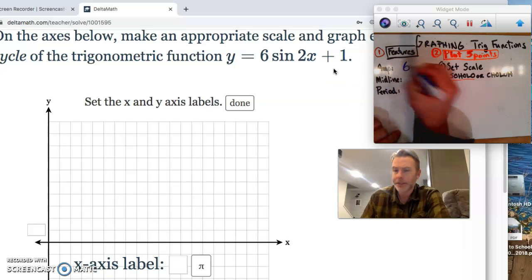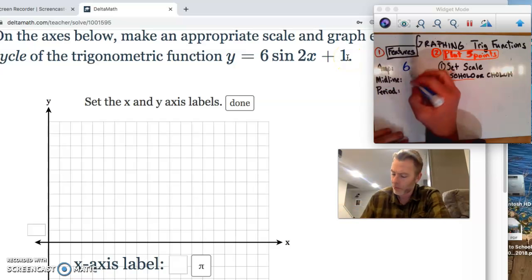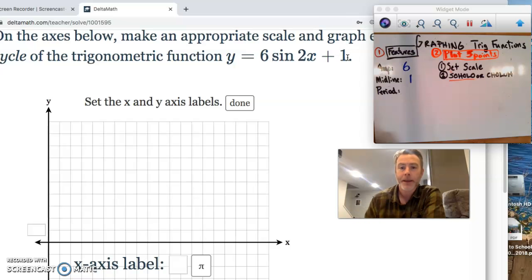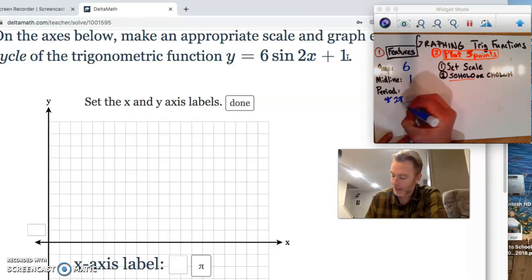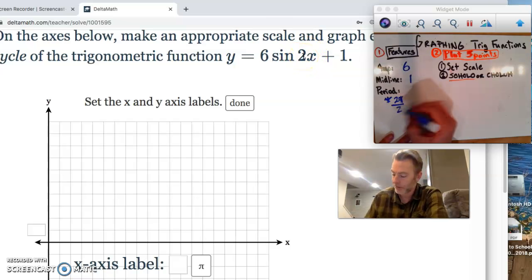Amplitude is that number out in front, 6. The midline of this is this number here, so y equals 1 would be our midline. It occurs at 1. And then our period. Remember how we find our period? We take 2 pi and we divide that by the frequency. The frequency is the number right here, right in front of x. So if we do that, we simplify this. These 2's cancel. The period of this problem is pi.